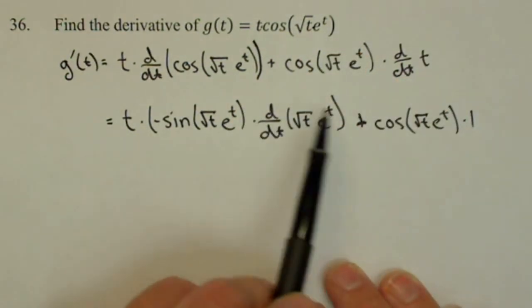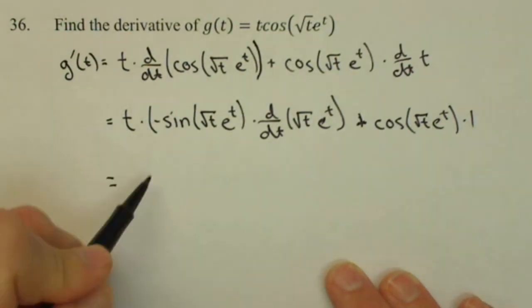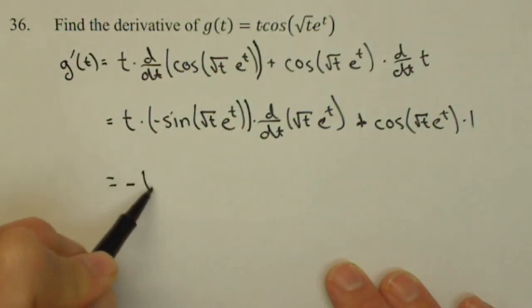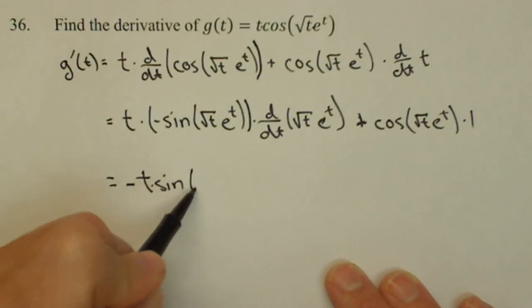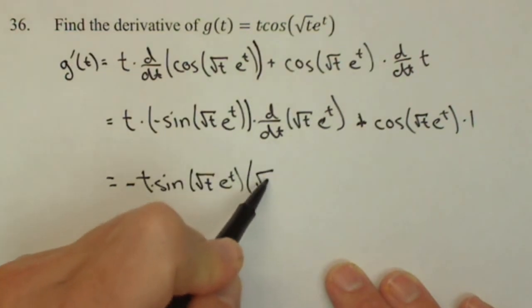We have one more derivative to take. This is going to be a product rule. So I'm going to pull the negative out front so I don't need the parenthesis that I forgot the other side of. Negative t times sine of square root of t e to the t times square root of t.